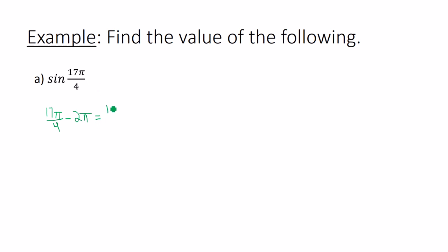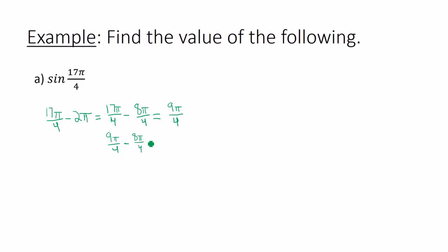Common denominator: take 17π/4 and subtract 8π/4. I had to convert 2π into 8π/4. This gives me 9π/4, which is still greater than 2π. So take 9π/4 and subtract 2π again, which is 8π/4. This gives me the angle π/4. So sine of 17π/4 is actually the exact same thing as sine of π/4.